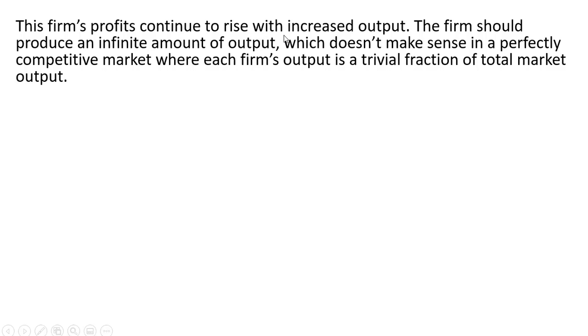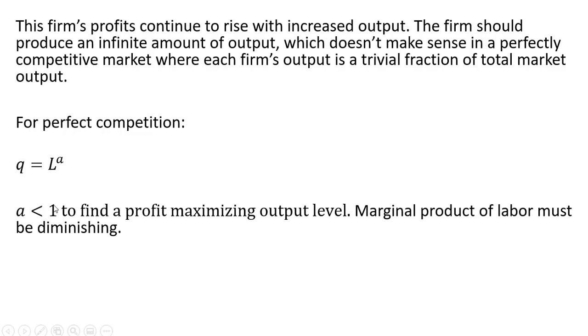This firm's profits continue to rise with increased output. The firm should produce an infinite amount of output. However, this doesn't make sense in a perfectly competitive market. So for perfect competition, just in general, this exponent here, A, has to be less than one to find a profit-maximizing output level.